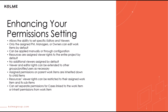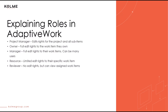Some roles automatically assign editor rights, so let's take a moment to talk about the different roles available. A role is a designation on work items that controls view and edit rights of the users assigned to the role. The roles available in Adaptive Work are Project Manager, Owner, Manager, Resource, and Reviewer.